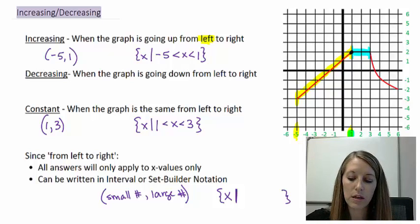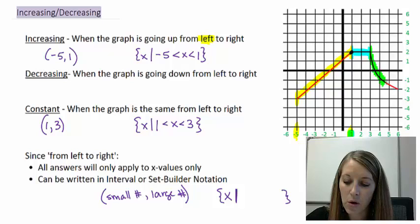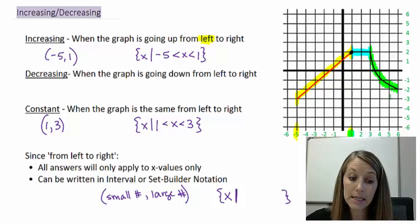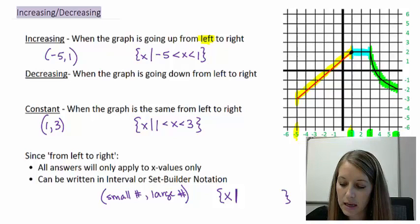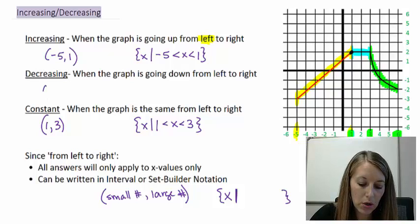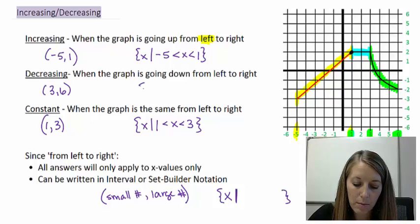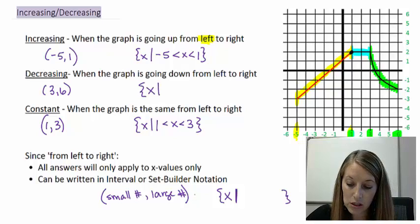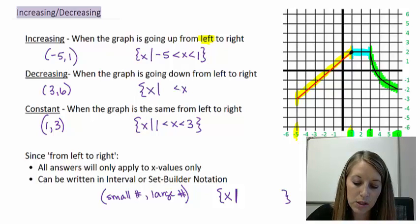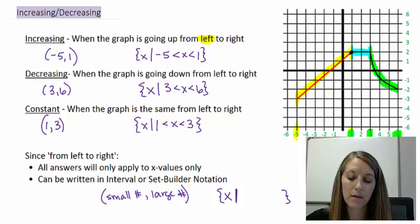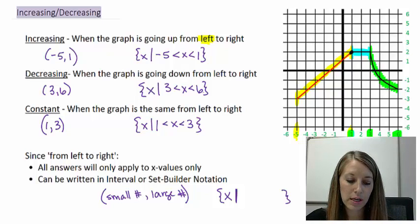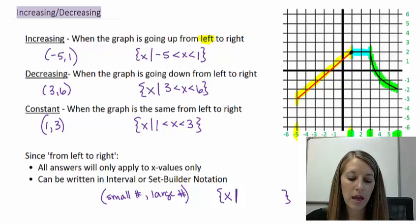Moving on to the last part of the graph: starting at x equals 3 and tracing the graph, it's going down from left to right, so I'm decreasing. It starts at 3 and ends at 6. So the graph is decreasing from 3 to 6 — interval notation (3, 6), or in set builder notation, the set of X's such that X is between 3 and 6. Now you understand how to identify where a graph is increasing, decreasing, or constant, and how to write it in either notation.